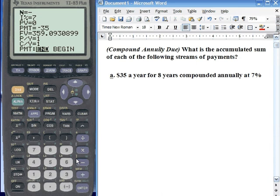For N is years, we'll put 8. Enter, enter. For our percentage, which is I/Y, we'll put 7. Enter. Present value is 0, so we'll leave it as it is at 0. And our payment is negative $35, so we'll just leave it as it is.